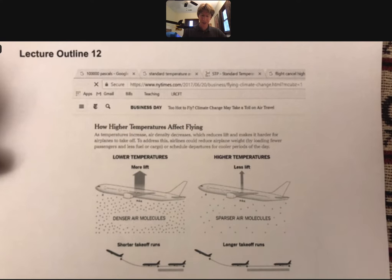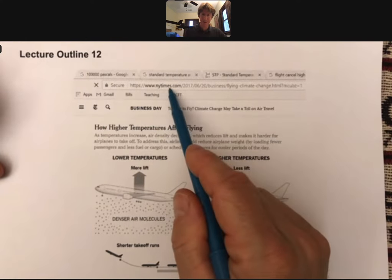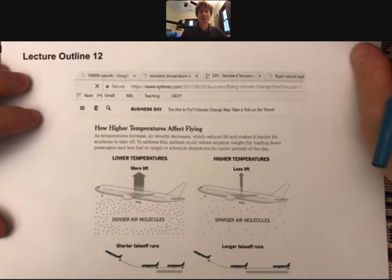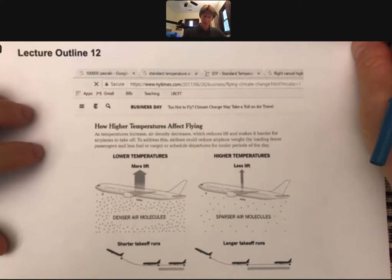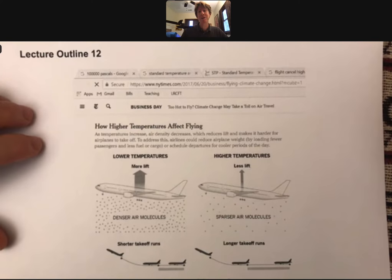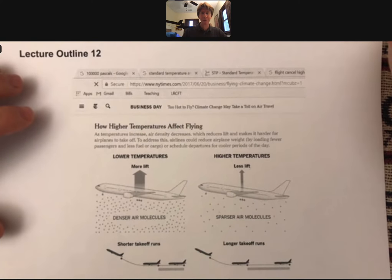And this was an article, actually it was from 2017, from the New York Times, hopefully a credible news source, and it was talking about how in Arizona temperatures were getting up to approximately 125-126 degrees Fahrenheit.